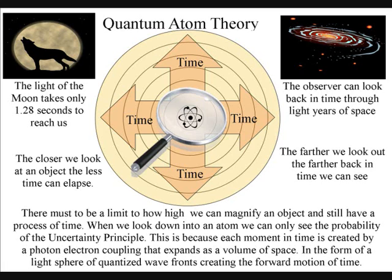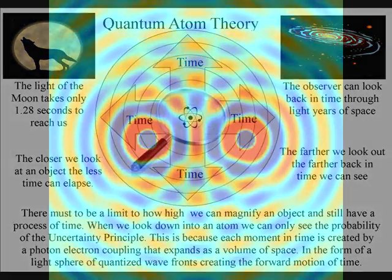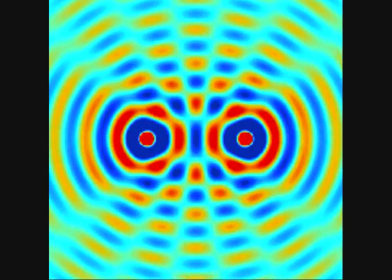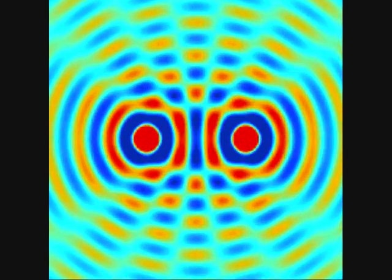This process of looking back in time can be put in reverse, and the closer we look at an object, the less time will elapse. When we look down into an atom, we can see time-dependent quantum mechanics, when the atoms bond together, forming interference patterns of their own.